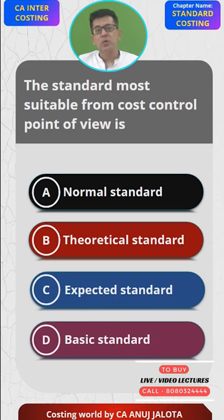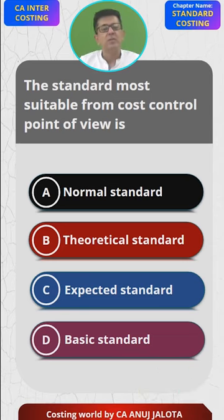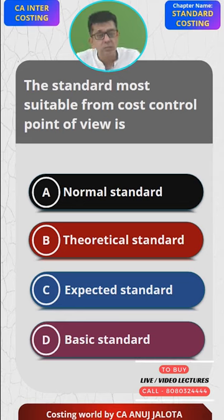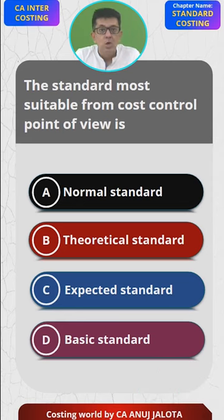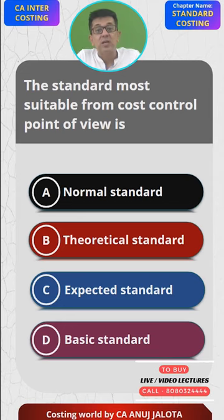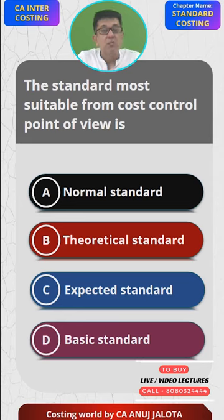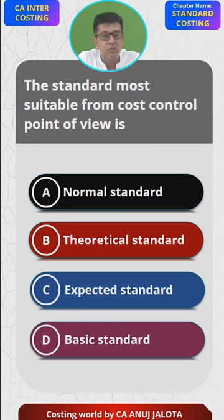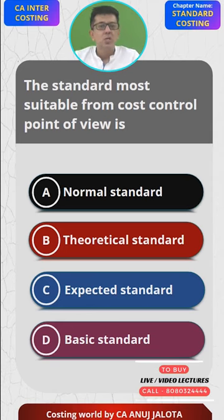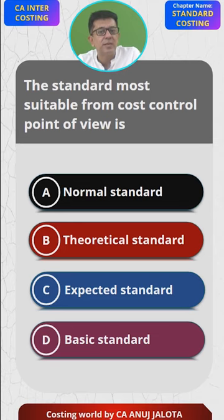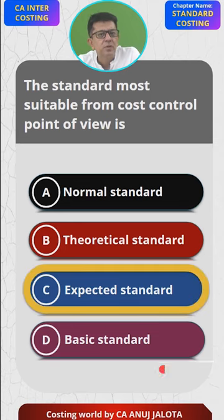So suppose you gave him a standard price of ₹4.5, but the actual price he purchased at was ₹4.6 — there will be a variance of ₹0.1. This ₹4.5 is nothing but expected standard. From a controlling point of view, you should always give expected standards to your managers, meaning whatever you want them to achieve in reality. So the answer here is C — expected standard — and that is the correct one.